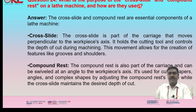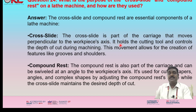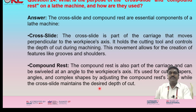What is the purpose of the cross slide and compound rest on a lathe machine? The cross slide and compound rest are essential components of the lathe machine. Cross slide: it moves perpendicular to the workpiece axis, holds the cutting tool, and controls the depth of cut during machining — allowing creation of features like grooves and shoulders. Compound rest: also part of the carriage, it can be swiveled at an angle to the workpiece axis and is used for cutting taper angles and complex shapes by adjusting its angle while the cross slide maintains the desired depth of cut.